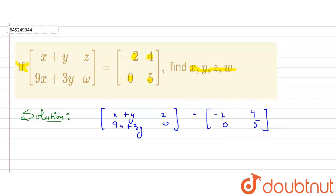Two matrices are equal, which means that their corresponding values will always be equal. So x plus y will be equals to -2. One more equation will be that 9x plus 3y will be equals to 0.